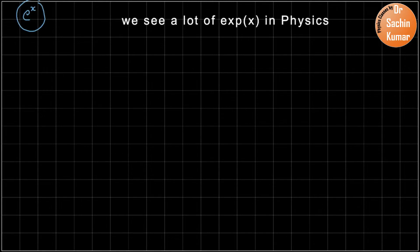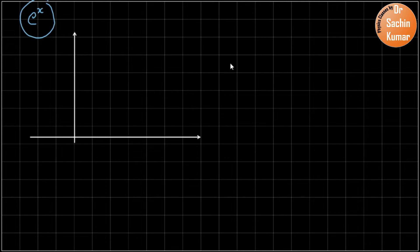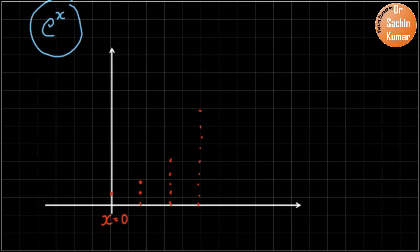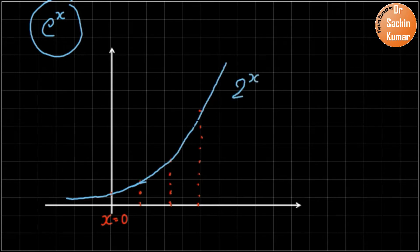To understand this, first we will discuss a little bit about exponential functions. Exponential functions are used to explain growth. Consider at x equal to zero there is some quantity which is one; at x equal to one it doubles to two; at x equal to two it doubles again to four; and then it becomes eight. If you plot this, you get a curve which you can write as 2 raised to the power x.